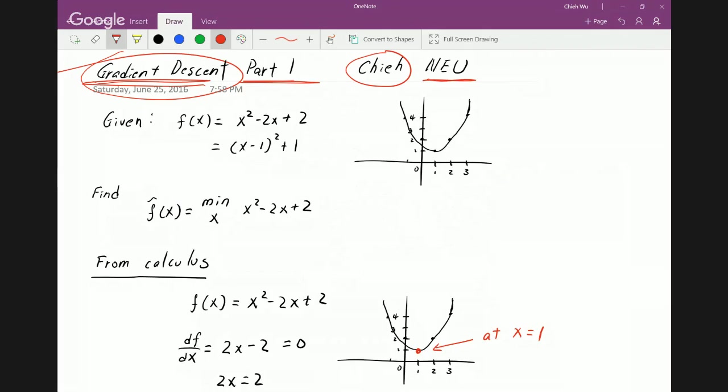It's basically a technique to find the minimum of a function. Now, we've looked at this before in calculus. Let's say if we have a function like this, which if we plot it out, we want to find the x where the function is minimized. We can see that it's 1.